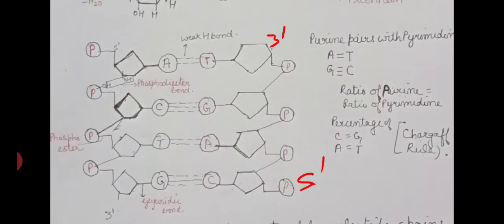Next we studied Chargaff's rule: in any DNA molecule, adenine combines with thymine and guanine combines with cytosine. According to Chargaff's rule, the percentage of cytosine equals the percentage of guanine, and the percentage of adenine equals that of thymine. In other words, the ratio of purines equals the ratio of pyrimidines.